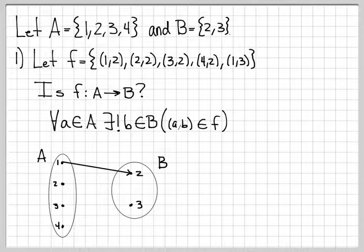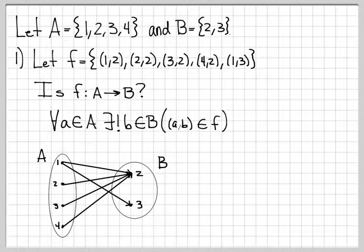We can visualize the function by drawing arrows from elements in A that go to elements in B. Since the element (1,2) is in F, that means we draw a line from 1 to 2. Similarly, (2,2) is in F, so we draw one from 2 to 2. (3,2) is in F, so we draw a line from the element 3 in A to the element 2 in B. (4,2) is in F, so we draw one from 4 to 2. And finally, (1,3) is in F, so we draw an arrow from 1 to 3.